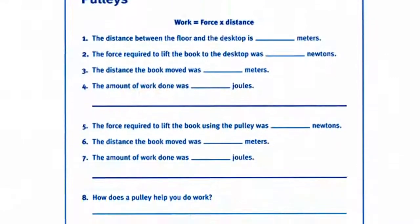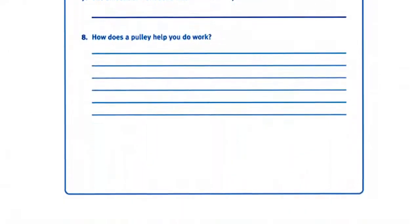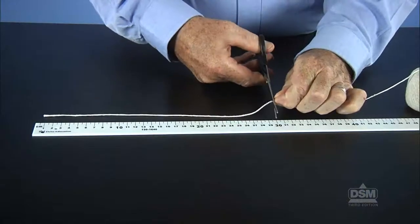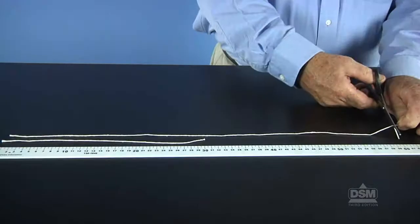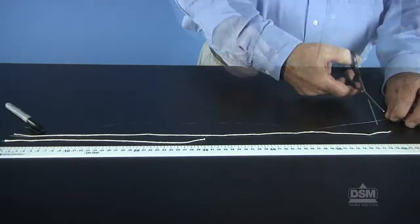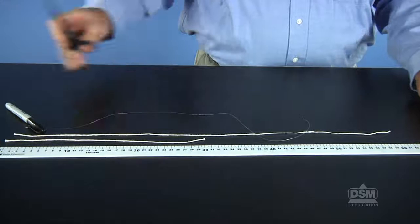To prepare for the activity, make a copy of Activity Sheet 8 for each student. For each team of four students, cut one 30-centimeter length of string, one 60-centimeter length of string, and one 1.5 meters length of fishing line.